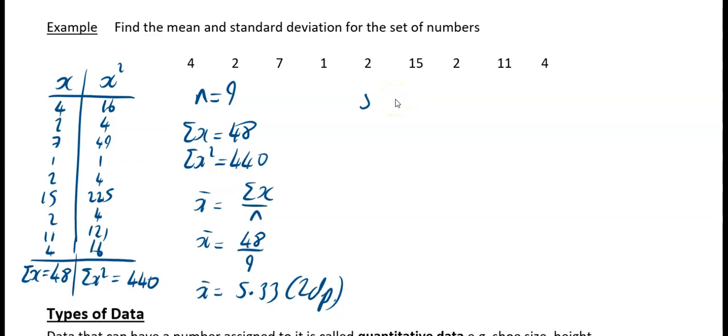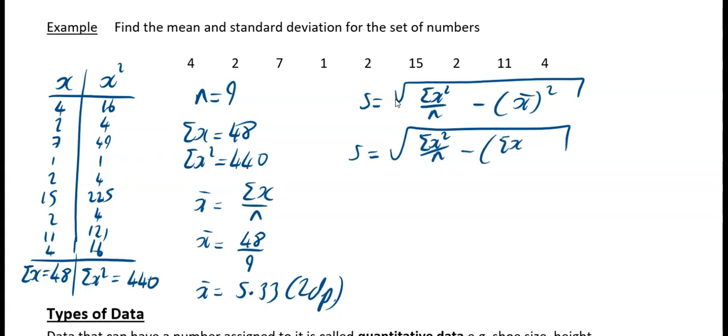Next thing we need to do is find the standard deviation. So we'll write down a formula. It was s equal to square root of sigma x squared over n minus your mean squared. So I'm going to write out the mean as sigma x over n, and then that gets squared.